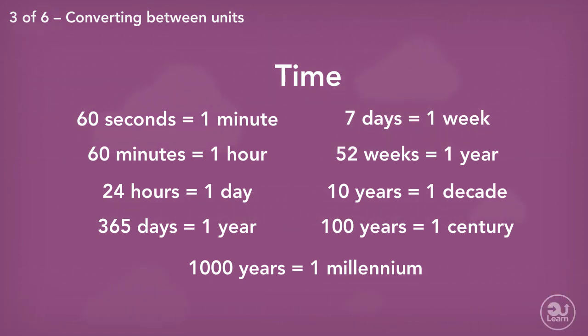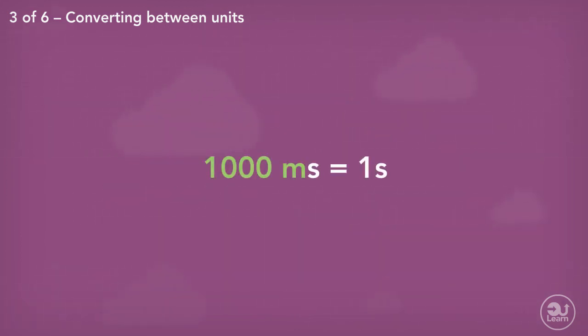If we wanted to go larger, 10 years makes a decade. 100 years makes a century. 1,000 years makes a millennium. The only part of time that is similar to the other measurements is milliseconds. 1,000 milliseconds is equivalent to 1 second. We can use these common relationships to convert between different units.